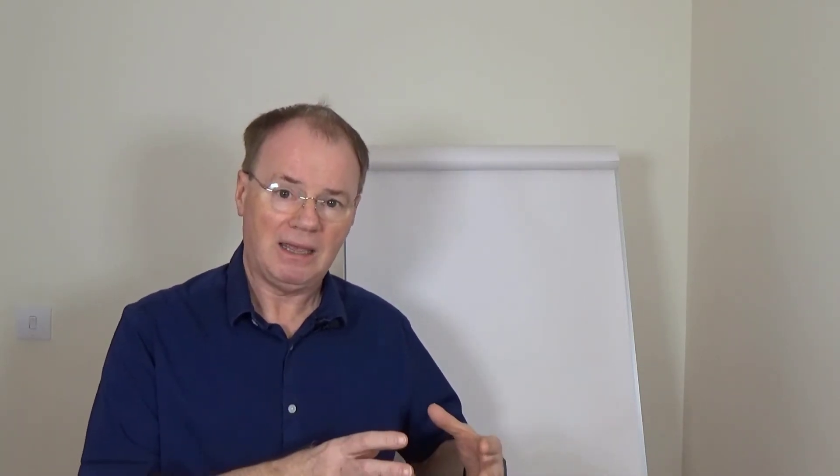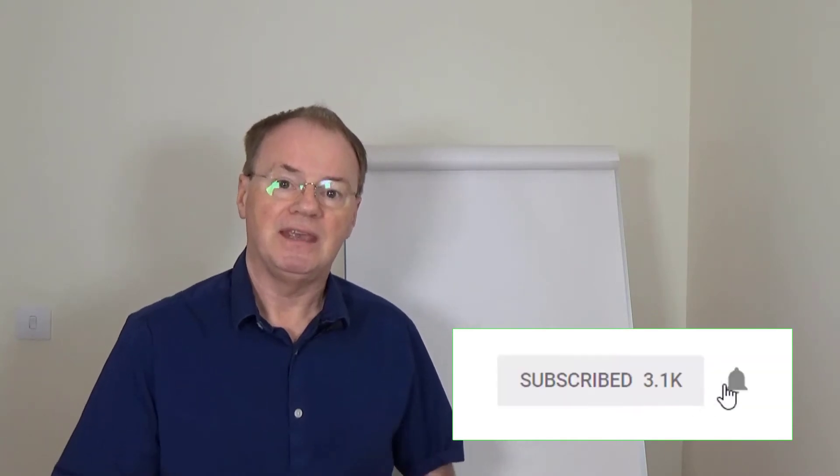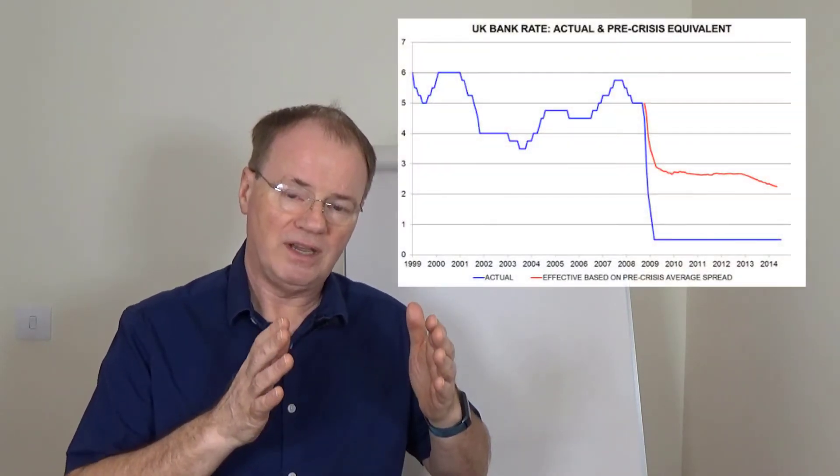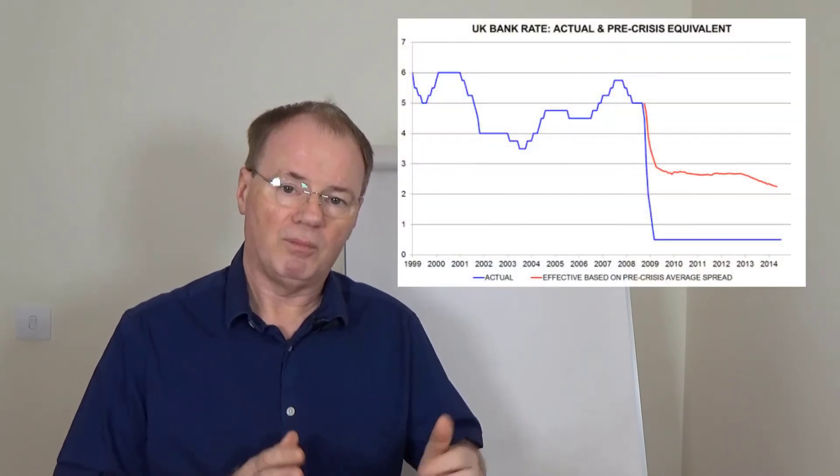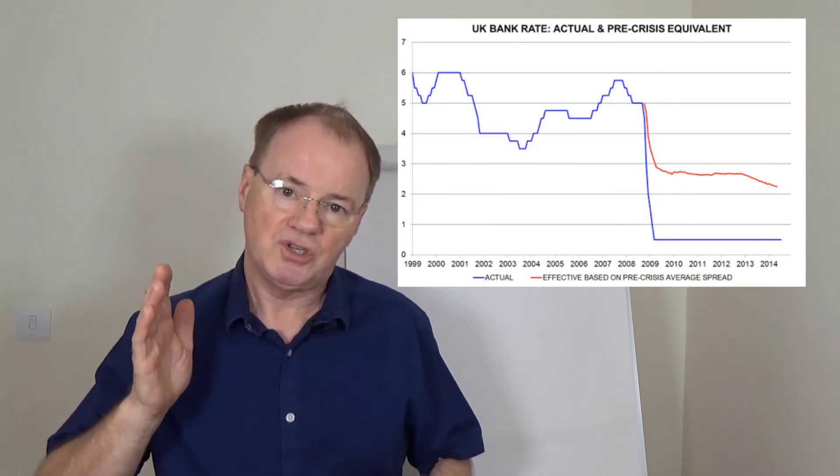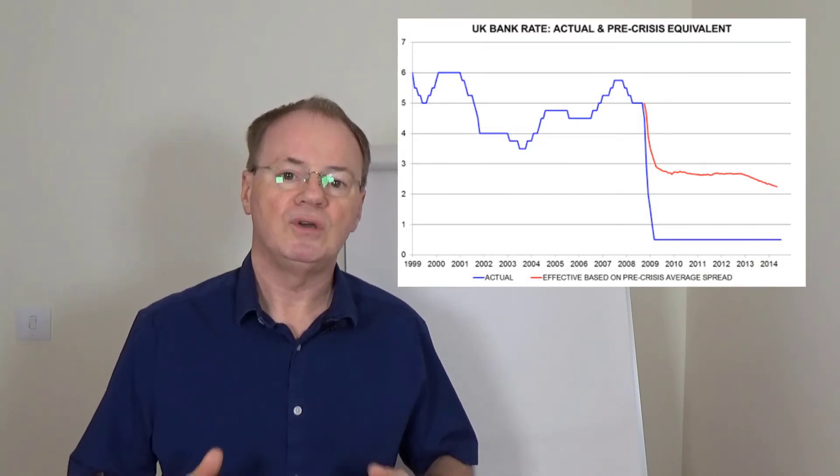This is the money that they buy the money at and then they lend it to you, and the difference between is called the spread. So the rate at which they borrow money and the rate at which they lend money to you is the spread.